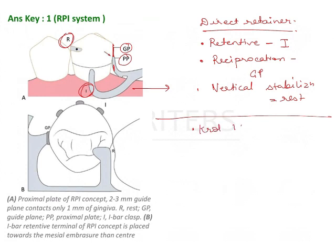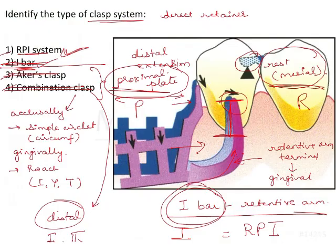Also remember that the I-bar is positioned more towards the mesial side — more towards the mesial embrasure rather than the center of the tooth. The three components are R (rest), P (proximal plate), and I (I-bar); you must remember each component and its function clearly. The answer to the question is RPI system.